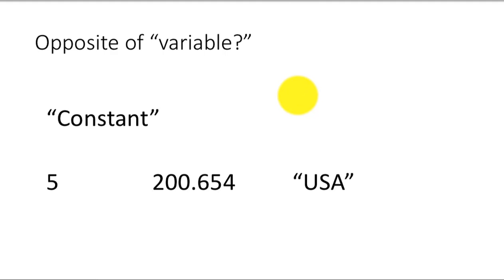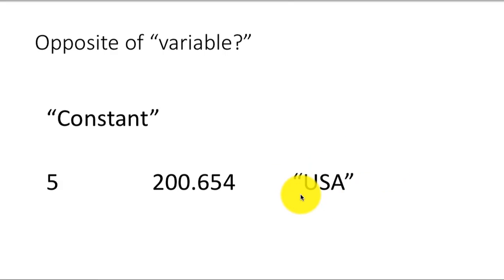The number 5 cannot suddenly become the number 6. A variable containing the number 5 may later contain the value 6. But 5 itself is just 5. Similarly, 200.654, USA, the string USA, the character constant — all of these are constants from the point of view of programming languages.